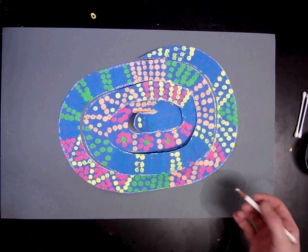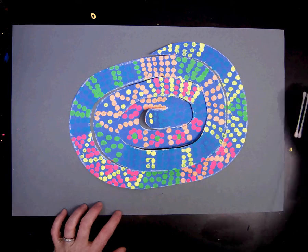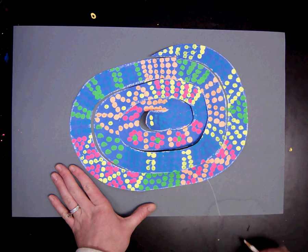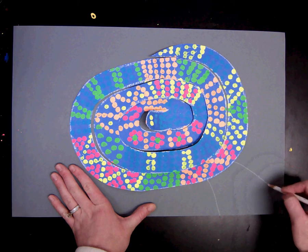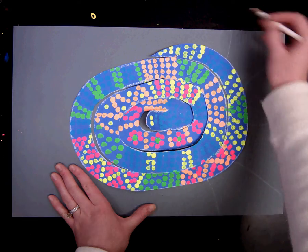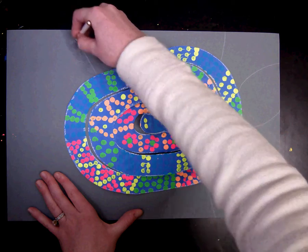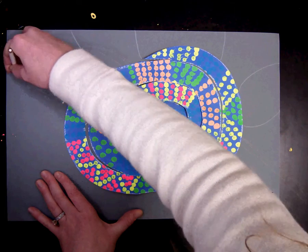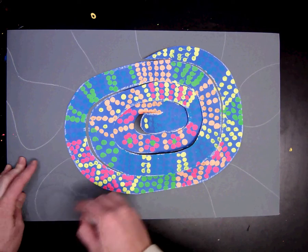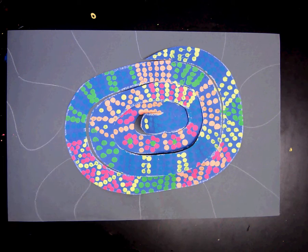But before we do that we want to divide our background up in shapes. So I am going to take this white colored pencil and I am just going to divide it up in sections. Going up to the snake and then notice how I am going off the page. They can be straight lines, they can be curvy lines. And we are going to put dots, different dots in each of them.